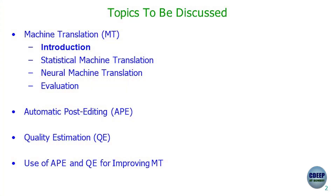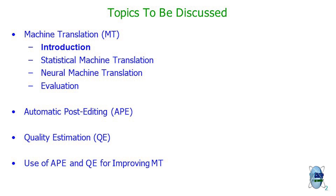Hi everyone, let's start the lecture. Today we will discuss three tasks in this field: machine translation, post-editing, and quality estimation. The outline will cover machine translation introduction, understanding how a simple SMT system can be built, briefly touching neural machine translation, and discussing evaluation of MT systems. We will also quickly discuss automatic post-editing and quality estimation, which are auxiliary tasks, and see how we can use them to improve MT models.